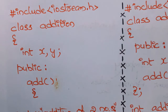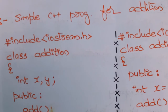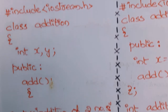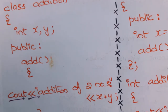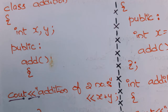Here I consider a simple program for addition of two numbers by using class and object. We will see how to create a class, how to create an object, and how to access them. By seeing this program you can understand what a class and object are. This is a very easy and simple C++ program.